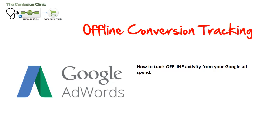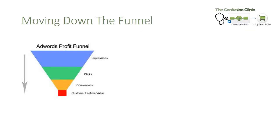Hi, this is Rob Drummond at the Confusion Clinic. This video is going to look at tracking offline activity from your Google Ad Spend. You might remember last time we were talking about the AdWords Profit Funnel, which says that when you run ads with Google, you're buying impressions on Google search inventory and your outcome should be generating customer lifetime value. Measuring conversions is a great starting point, but conversions are still an interim measure. We want to move down the funnel and measure which campaigns and ad groups are generating the most customer lifetime profit.